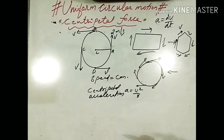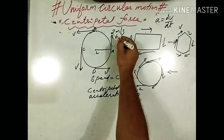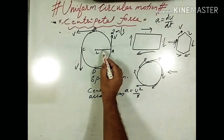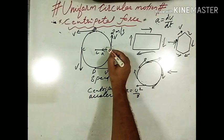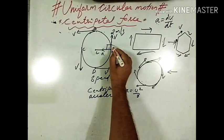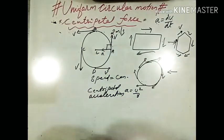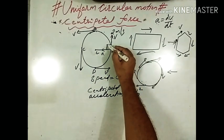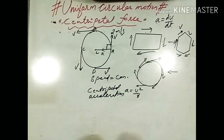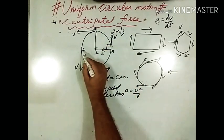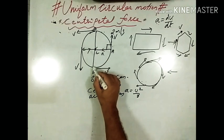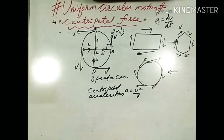Since acceleration is a vector quantity, what is the direction of centripetal acceleration? Centripetal acceleration is always directed towards the centre. You can also note that the velocity and acceleration are always perpendicular to each other. At every point on the circle, the acceleration is directed towards the centre.